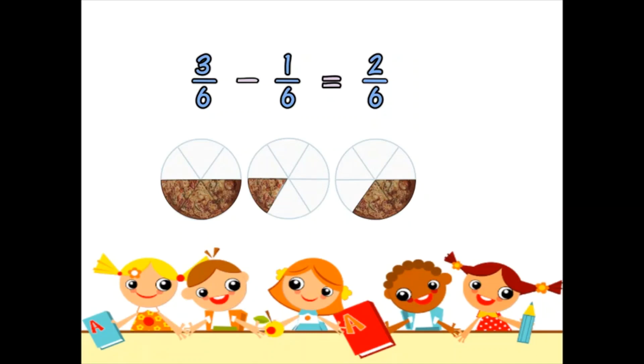Yes, when the denominator is same, we are going to subtract the numerators. So 3 minus 1 is 2. So the answer will be 2 by 6.